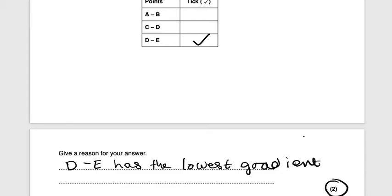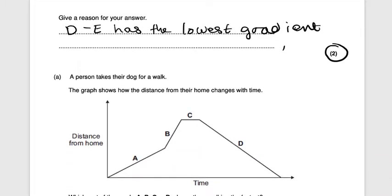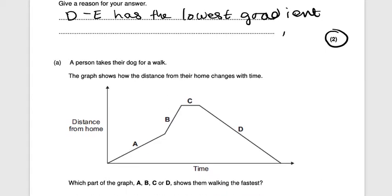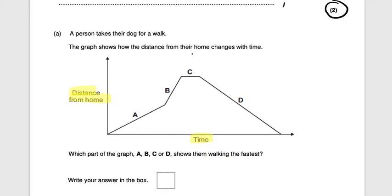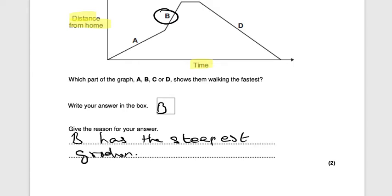Next question: a person takes their dog for a walk. The graph shows how the distance from their home changes with time. Which part of the graph — A, B, C, or D — shows them walking the fastest? On a distance-time graph, the steepest gradient means the fastest speed, so the answer is B. The reason: B has the steepest gradient, giving you two marks.